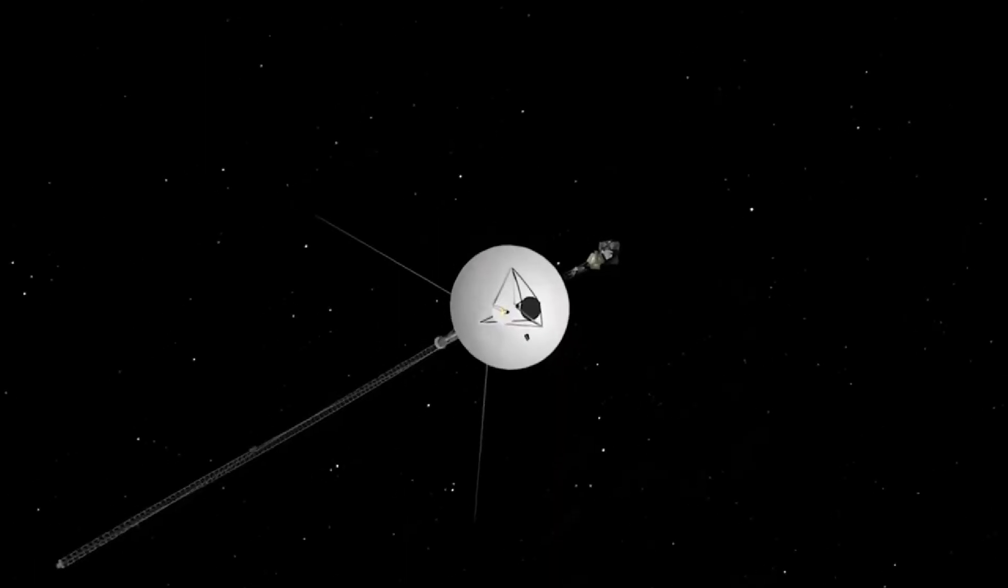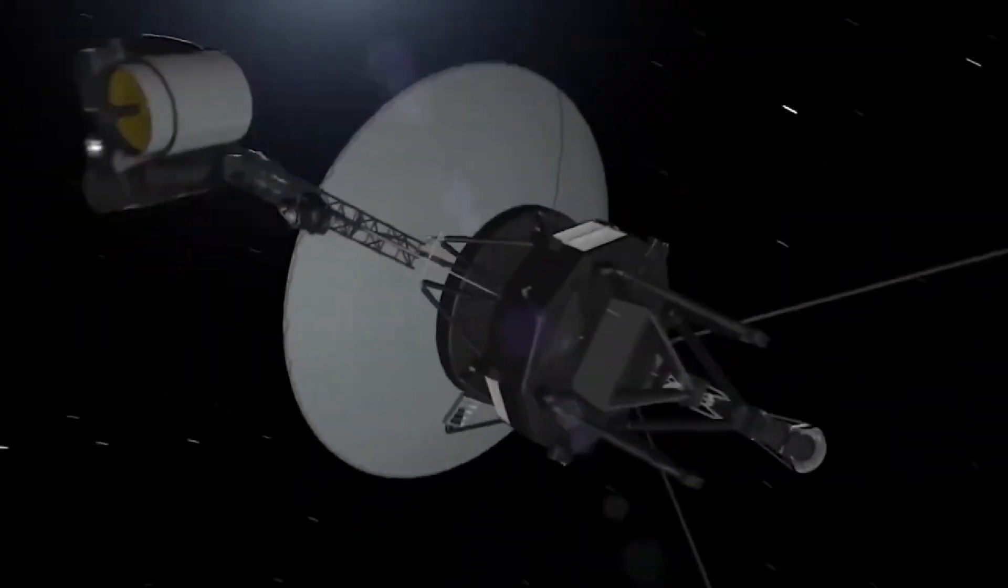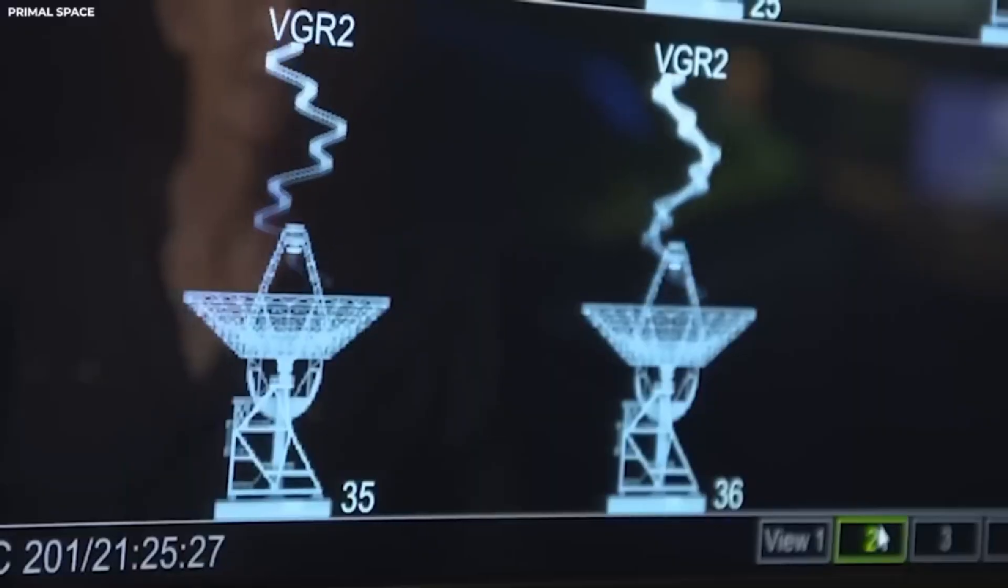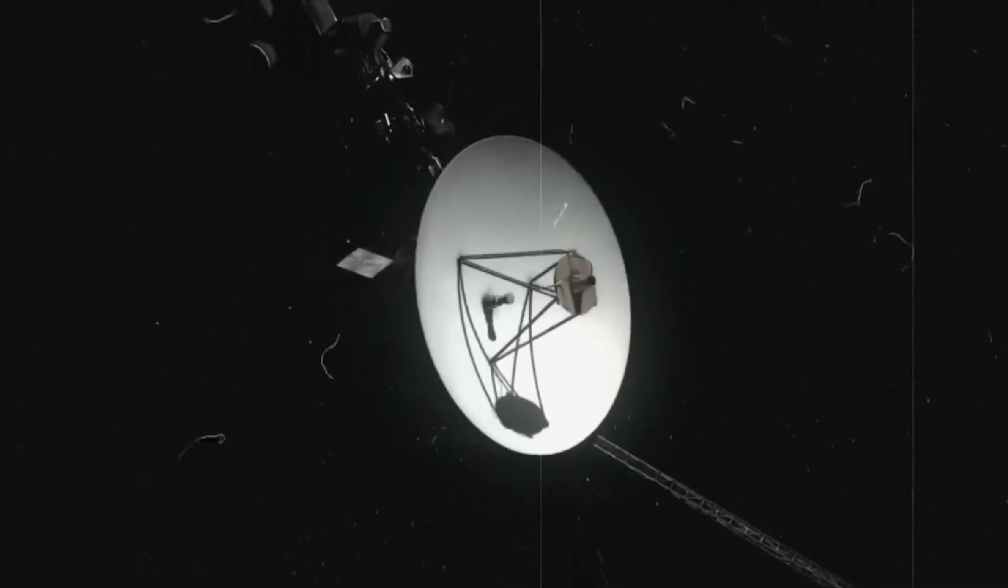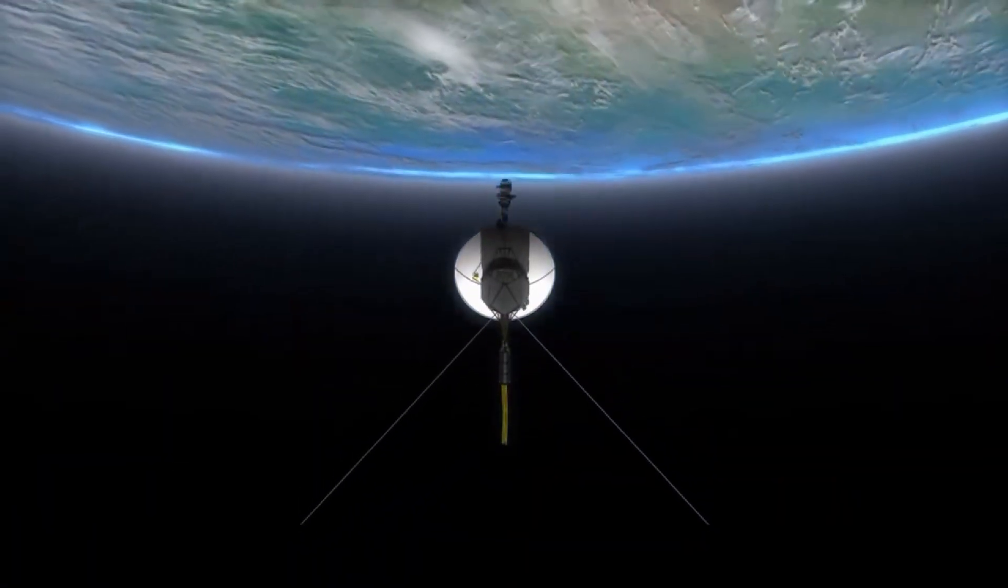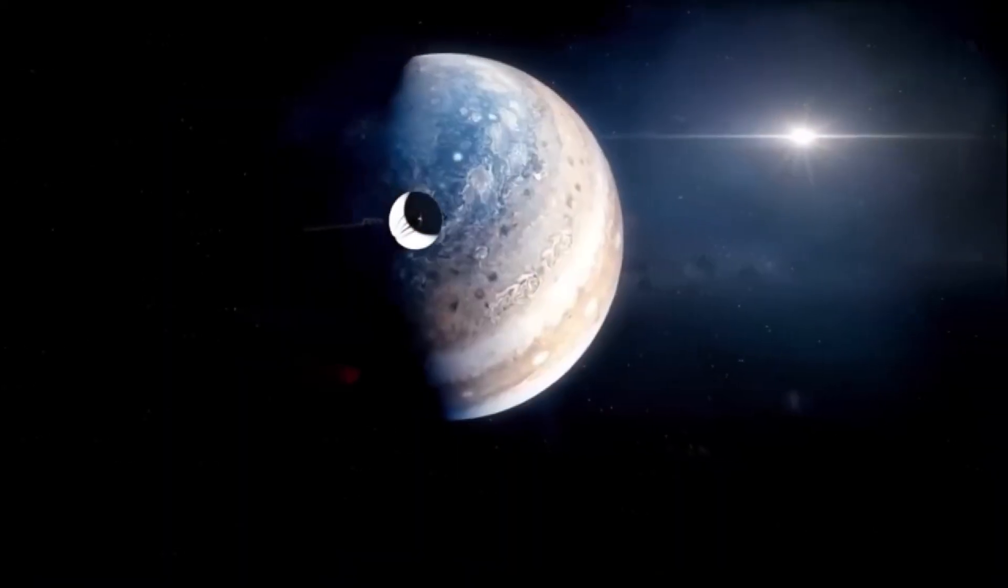And now, with its antenna still pointing toward Earth, Voyager appears to be returning, or being pulled back. What did it find in the darkness? What did it see that made it turn around? To understand how extraordinary this moment is, we have to go back to the beginning.